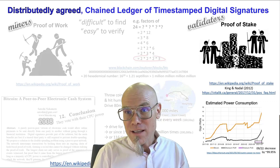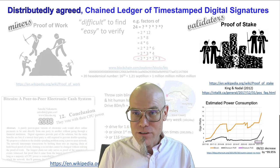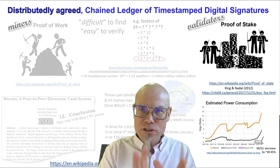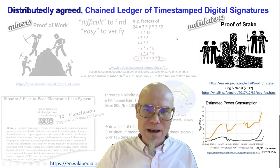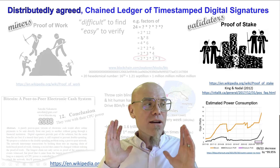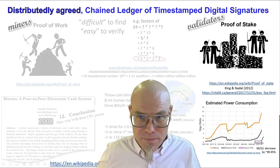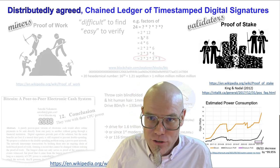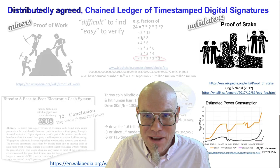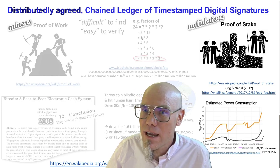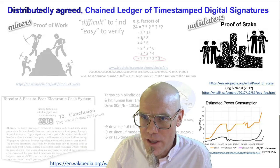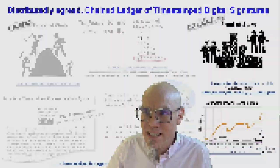In proof of work we call participants miners; in proof of stake we call them validators. We put chips in the middle and validate. There are many more ways of creating consensus — as many ways to agree as to disagree. But proof of work and proof of stake are the two most important consensus algorithms.